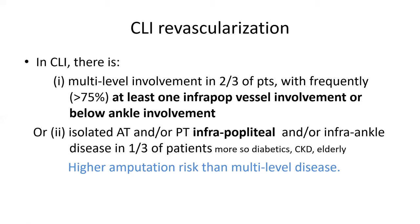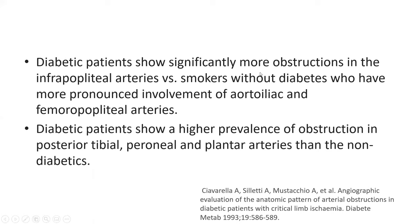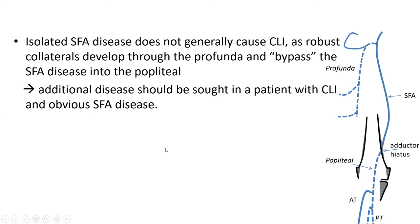Extensive iliac occlusion by itself can cause critical limb ischemia, but less so than having extensive anterior tibial and posterior tibial disease. You're particularly likely to have CLI if both anterior tibial and posterior tibial are involved, although involvement of only one can also cause CLI. Diabetic patients tend to show more obstruction in infrapopliteal arteries, whereas smokers without diabetes have more pronounced involvement of aortoiliac and femoralpopliteal arteries.